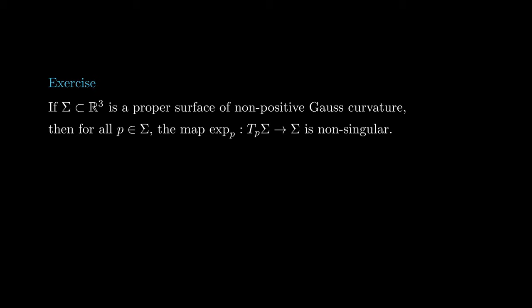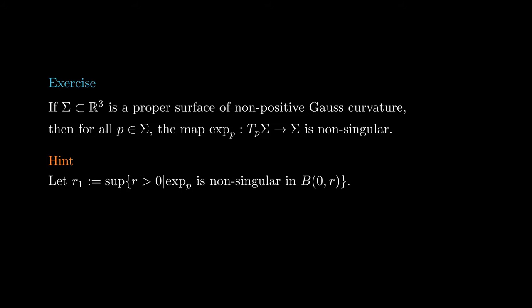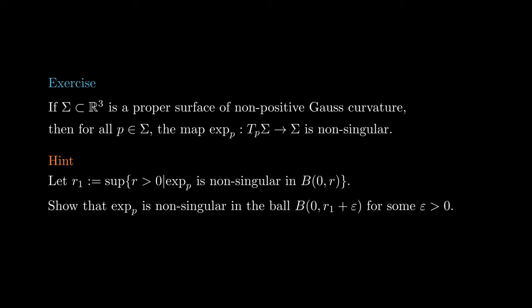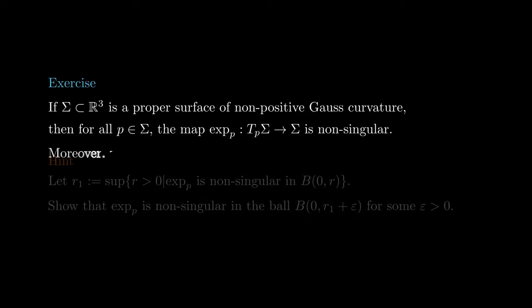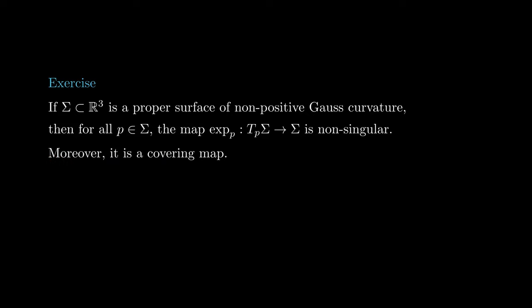It turns out that in the case of non-positive curvature, one can bootstrap the hypothesis from the conclusion. That is, if sigma is a proper surface of non-positive curvature and p is in sigma, then dx is injective at all points of Tp sigma. Assume the conclusion fails, and let r1 be the largest radius for which dx is injective at all points of the open ball of radius r1 around 0. Then use the proposition we just proved to check that dx is injective at all points in a slightly larger ball, contradicting the maximality of r1. From here, it is also not hard to check that exp is a covering map from Tp sigma to sigma. This is also known as the Cartan-Hadamard theorem.